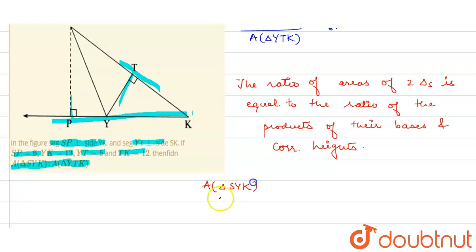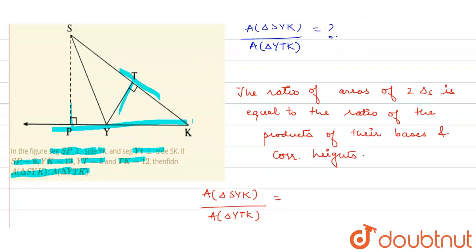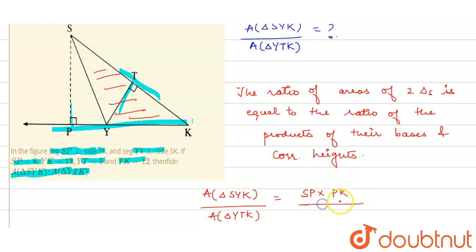Area of triangle SYK upon area of triangle YTK. For triangle SYK, the base is YK and the height is SP. For triangle YTK, the height is YT and the base is TK.